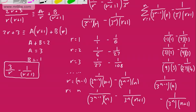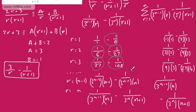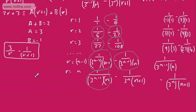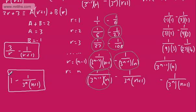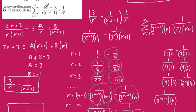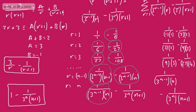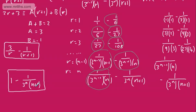Now it's just a case of using our understanding — when we add all these terms up, everything in the middle drops out due to telescoping. All the intermediate terms cancel with each other, leaving us with just the first and last terms. So the original sum is equal to 1 minus 1 over 3 to the power of N times N plus 1. Therefore the sum from R equals 1 to N of 2R plus 3 over R, R plus 1, times 1 over 3 to the R, equals 1 minus 1 over 3 to the N times N plus 1.